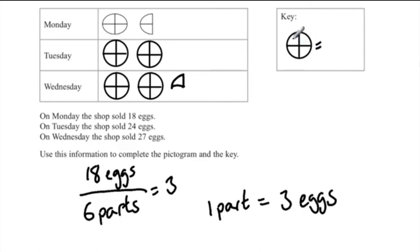Complete the key: each part equals 3, so we have 3, 6, 9 and 12. That should be our final answer.